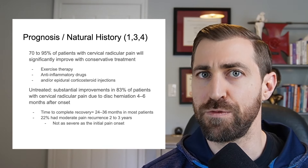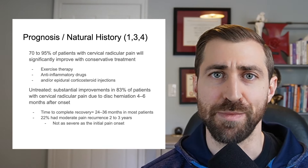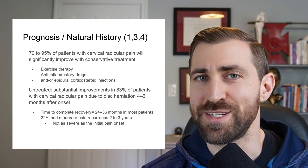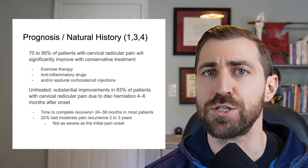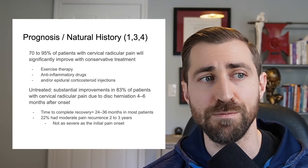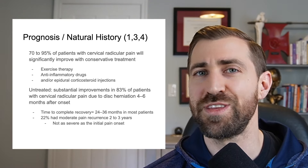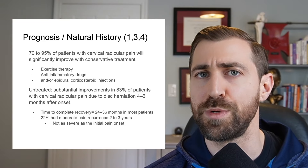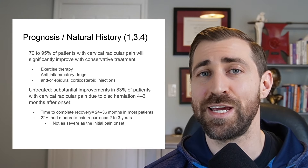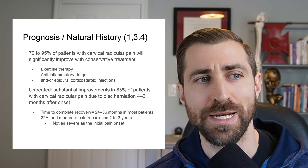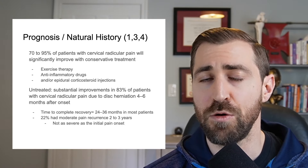What's the prognosis or natural history of cervical radiculopathy — does it get better over time? Generally speaking, 70 to 95% of patients with cervical radicular pain will significantly improve with conservative treatment. Conservative treatment includes time, exercise therapy such as physical therapy, anti-inflammatory drugs like NSAIDs taken orally, and epidural corticosteroid injections. Most folks are going to get better over the course of time with either nothing or some of these easy treatments.